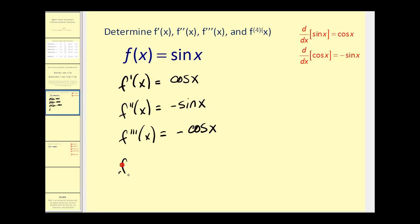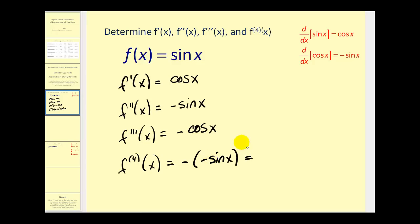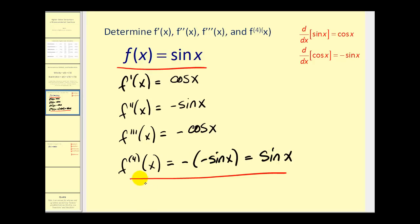And then lastly, the fourth derivative. The derivative of negative cosine x — we have a negative here — so we're going to have negative times negative sine x, which is equal to sine x. What we'll notice is that the fourth derivative and the original function are the same.